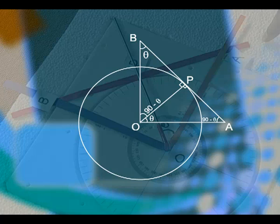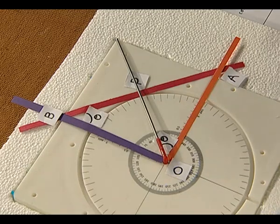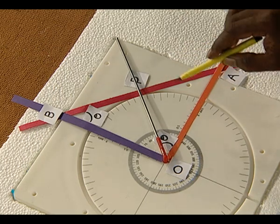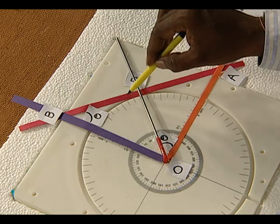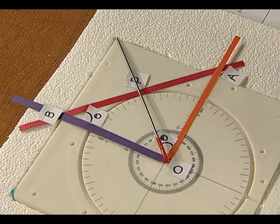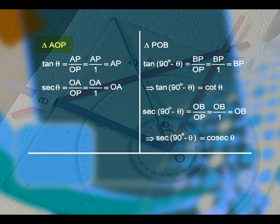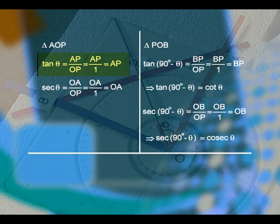Now, on this circular board, we have two right angle triangles: O, A, P and P, B, O — the right angle is here and here. In triangle A, O, P, tan theta equals opposite side by adjacent side, which is AP by OP, equal to AP by 1, equal to AP.